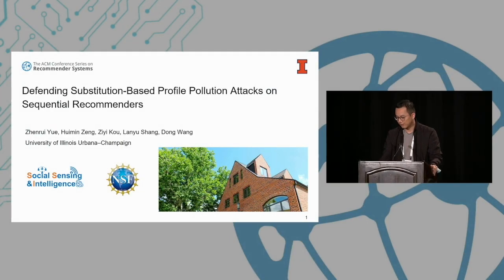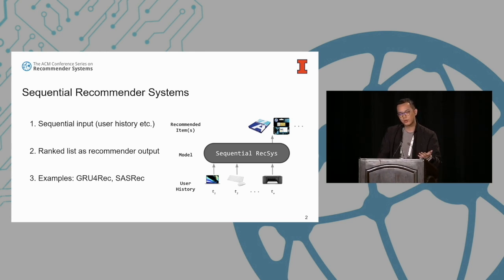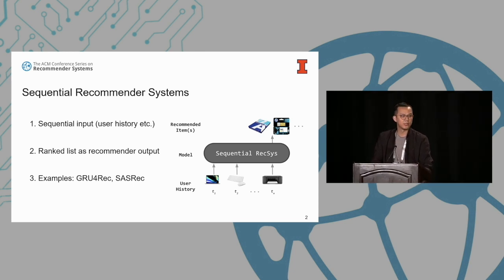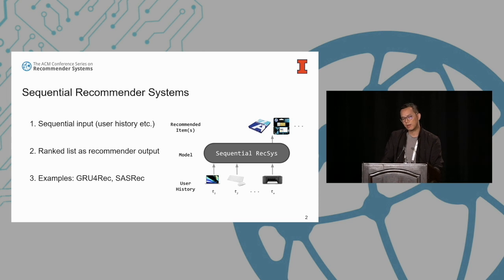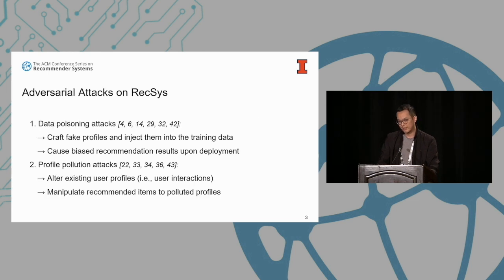First, I'll talk about the background of sequential recommenders. Sequential recommenders are a specific type of recommender that takes sequential input and outputs a list of recommended items. In our case, the sequential input can be user history interactions, and the recommender would output a probability distribution or a list of recommended items. Examples include GRU4Rec, SASRec, Locker, and others.